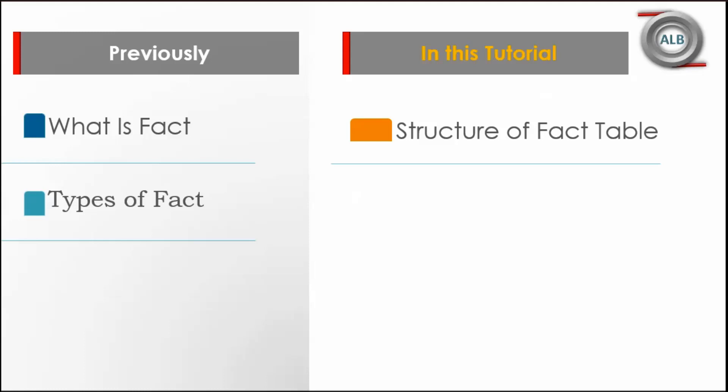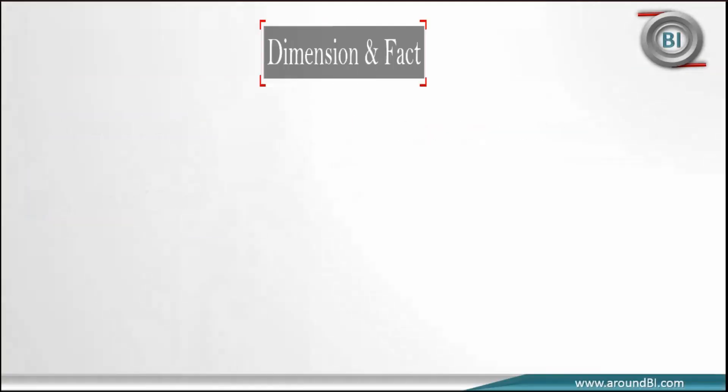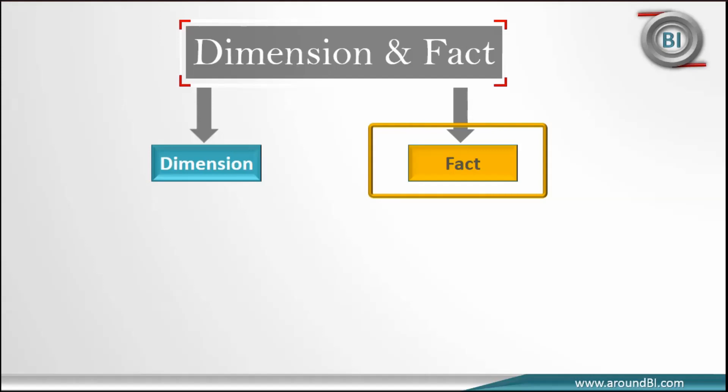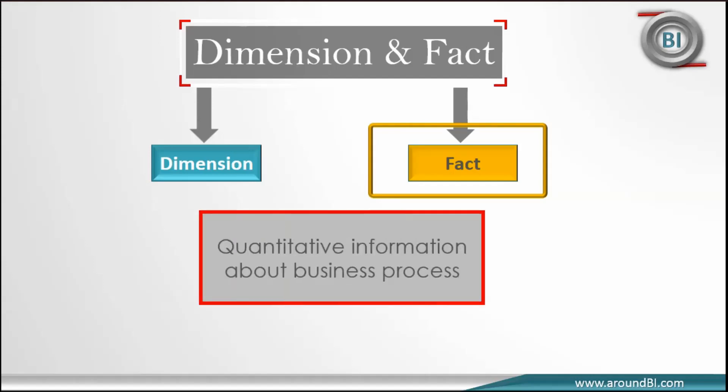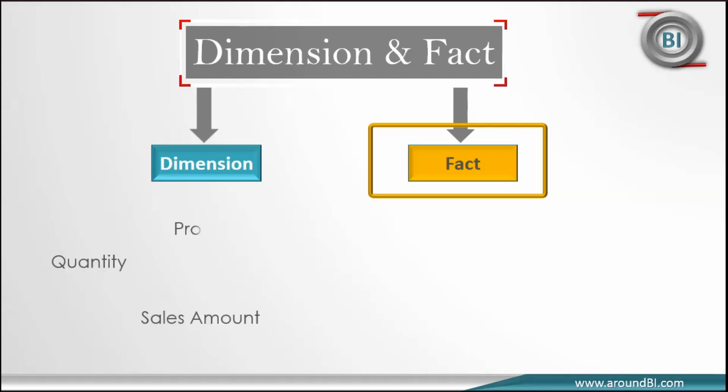Before starting, a small recap on what we learned. In our tutorial video on dimensions and facts, we defined facts and explained that a fact is an entity that provides quantitative information about a business process. That's why they are also called measurements or metrics. They are mostly numeric in nature. Quantity sold, sales amount, total earning, profit, margin, and total turnover are some common examples of facts used in a data warehouse.